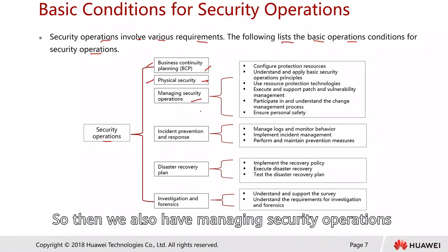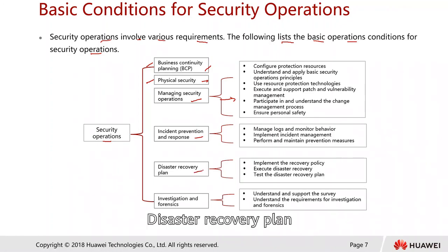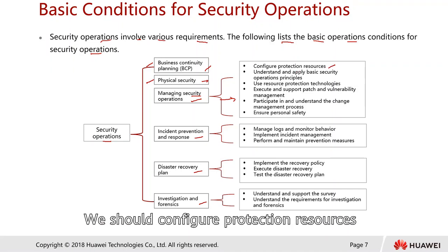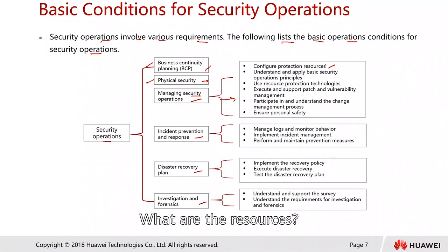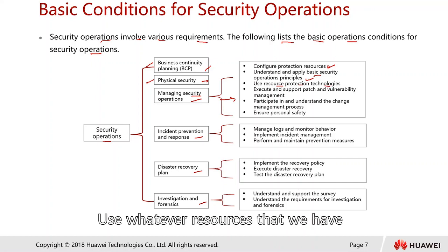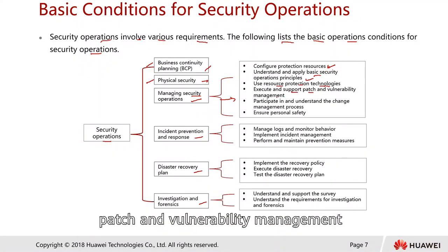We also have managing security operations, with subcategories including incident prevention and response, disaster recovery plan, and investigation and forensics. In terms of managing security operations, we should configure protection resources, understand and apply the basic security operation principles, and use resource protection technology — such as antivirus and patch update servers. For Windows, we have WSUS servers to execute and support patch vulnerability management.